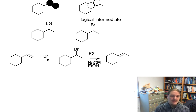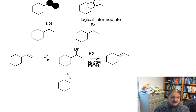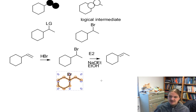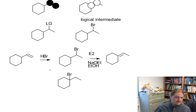Now, you might say: this first reaction generates a carbocation, so it could rearrange, and maybe you get this product as a competition, and then that second E2 reaction isn't going to be as competitive. You're right.